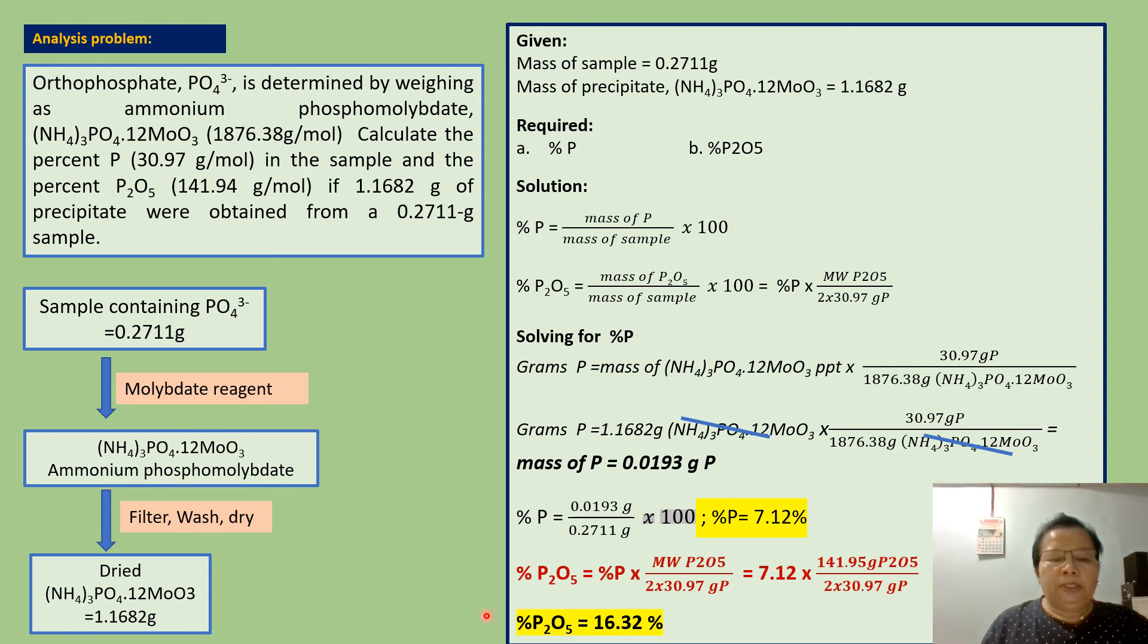Now we can solve for percent diphosphorus pentoxide. This equals 7.12 times 141.95 grams of P2O5 divided by 2 times 30.97 grams of phosphorus. The answer is 16.32 percent P2O5.